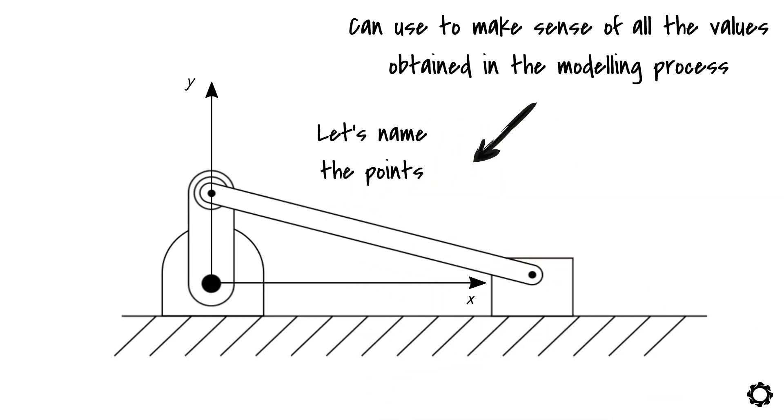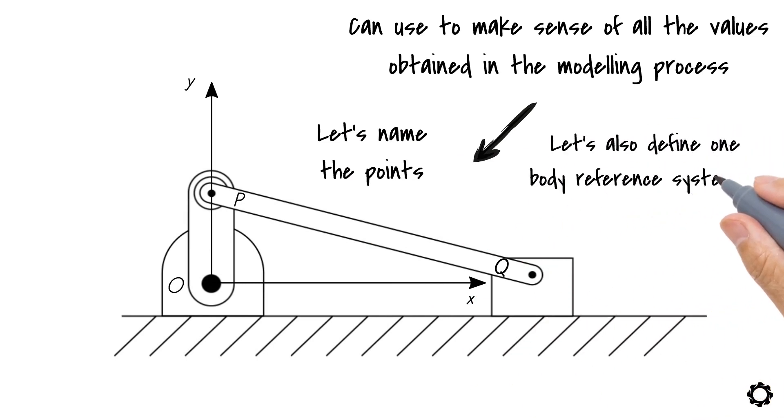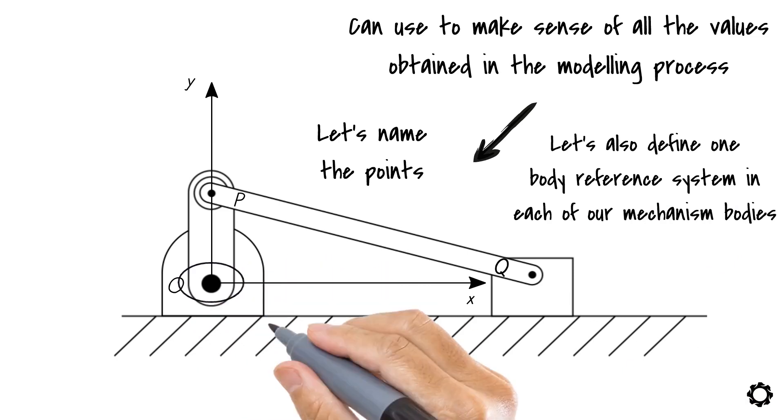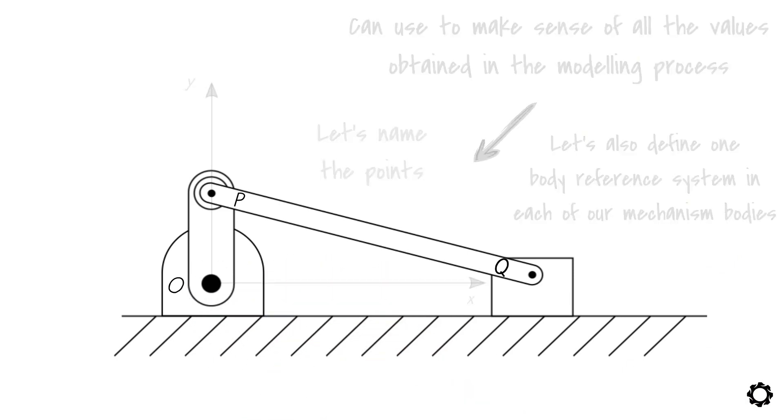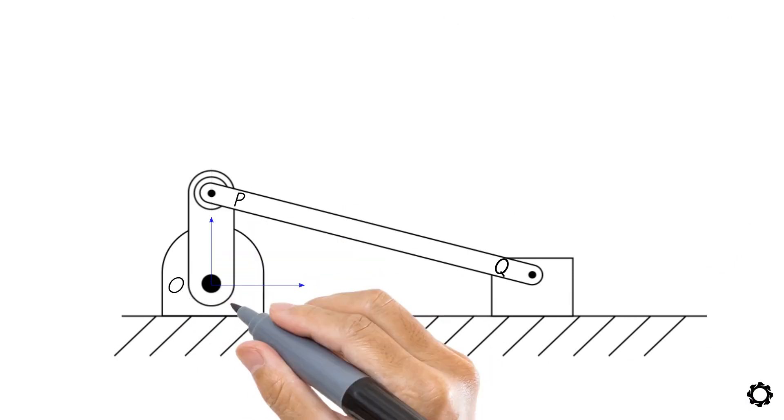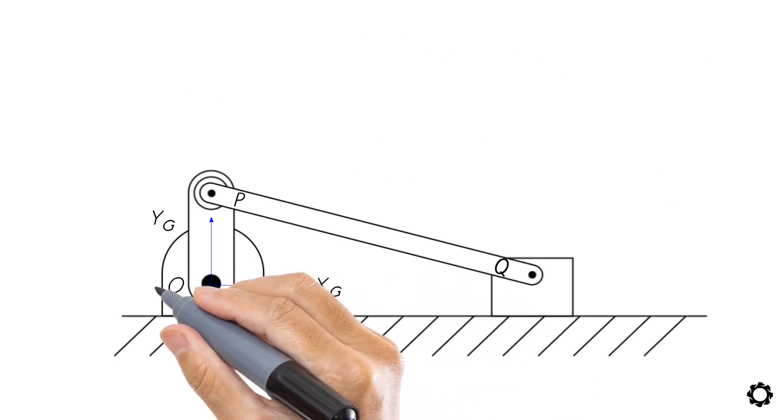As the next step, let's name the points where the constraints are located. Let's also define one body reference system in each of our mechanism bodies, starting with the ground. Let's put a ground fixed reference system with axes YG and XG located on the point O.